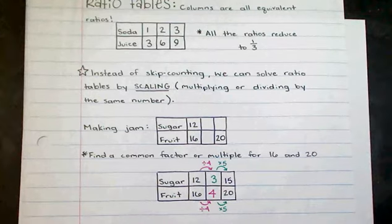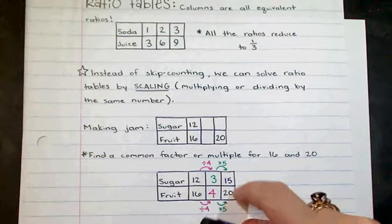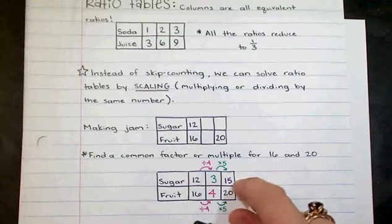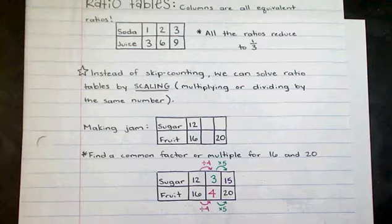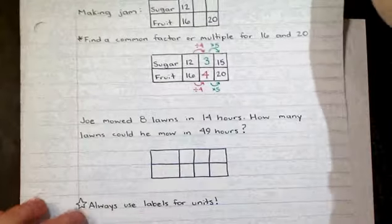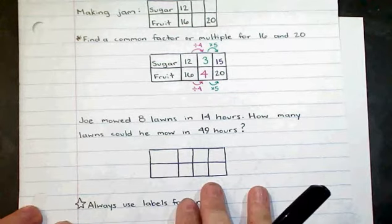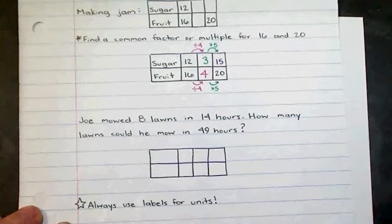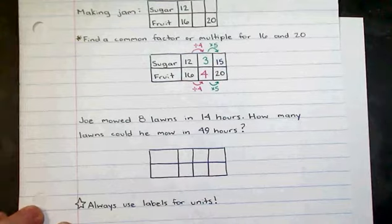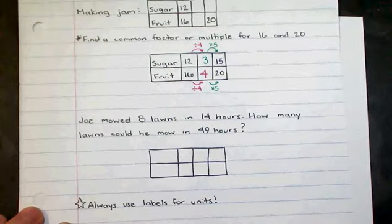So I know that for 20 pieces of fruit, I would need 15 cups of sugar, or whatever the word problem happened to be. So you might be given a blank ratio table to start with, or you might have to draw your own. As long as we remember units, and units are crucial for organizing this information.